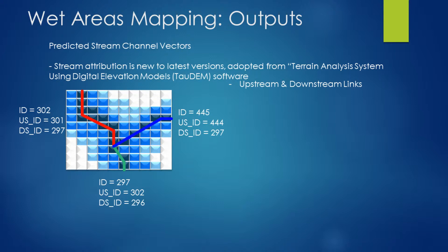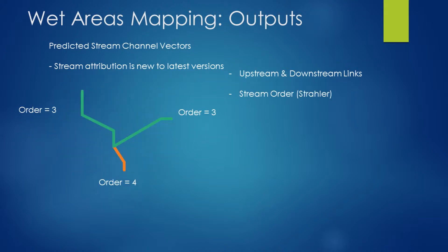Next we have our stream channel vectors. Within these wet area zones we have predicted stream channel locations. In previous versions there wasn't much stream attribution associated with these datasets, but in the latest versions we have started to apply stream attribution adopted from the TauDEM software suite.